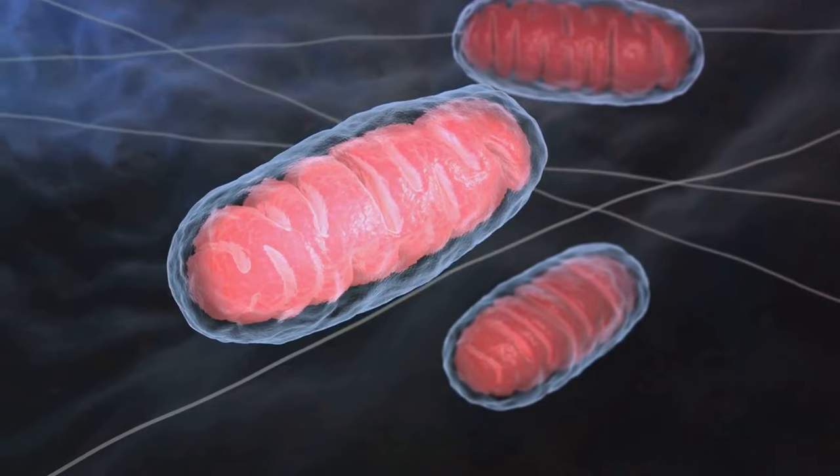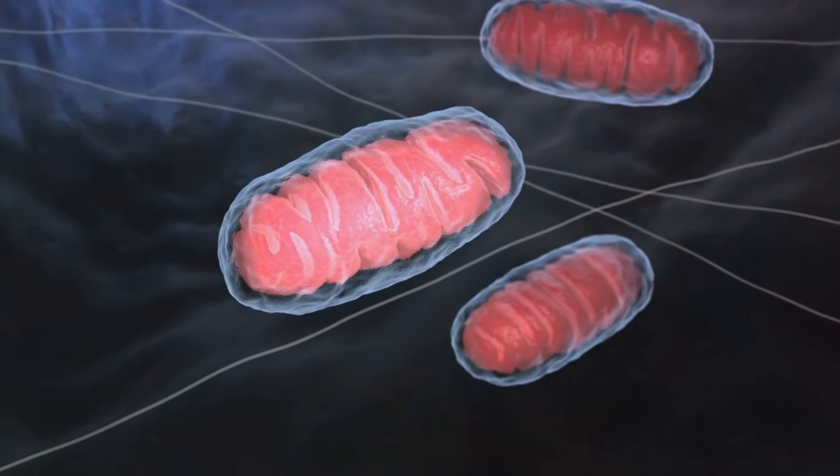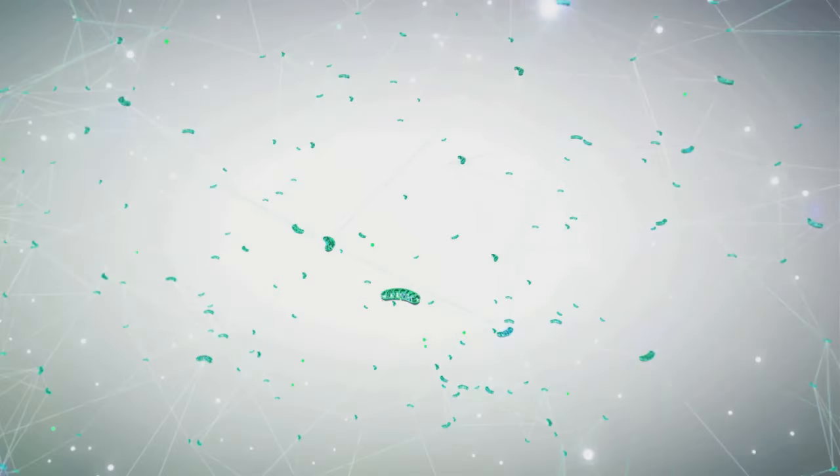But unlike other parts of the cell, mitochondria have their own DNA, separate from the rest of the genetic material in the cell nucleus. This mitochondrial DNA is small, circular, and packs a punch when it comes to the role it plays in our lives.